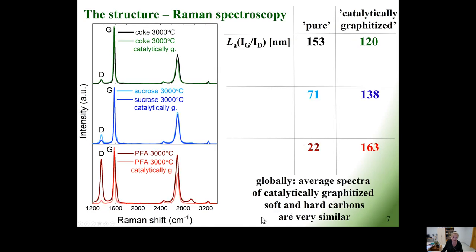Raman spectroscopy as a complementary global structural probe also demonstrates the transformation of the structure of hard carbons when they are catalytically graphitized. The size of the crystallites in the in-plane direction, calculated based on the intensity ratio of the D to G peak, is comparable for cokes and even slightly greater than for graphite from graphitizing coke, since the D to G intensity ratio is comparable for both soft and hard carbons catalytically graphitized.